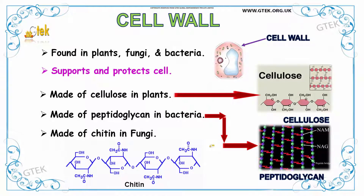Let us discuss about the cell wall. A cell wall is found in plants, fungi, and bacteria, and it supports and protects the cell. It is made up of cellulose in plants, peptidoglycan in bacteria, and chitin in fungi.